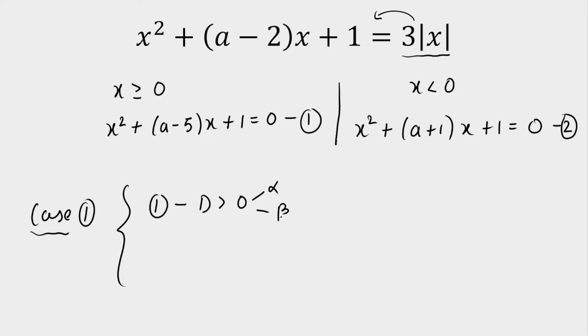Once we get two roots from the first equation, we want only one root from the second equation. In order to get a single real root, we want the discriminant of the second equation to be equal to 0. So this is Case 1.